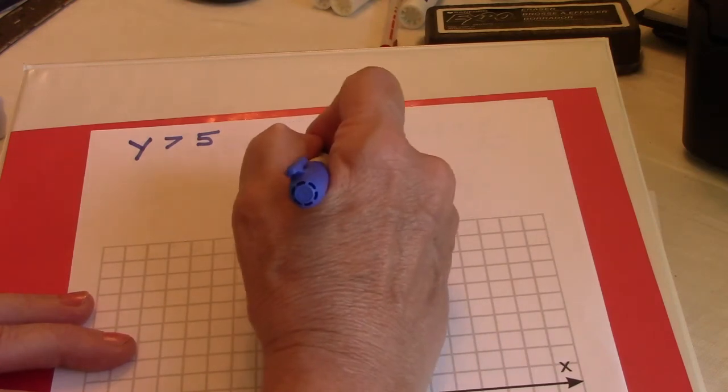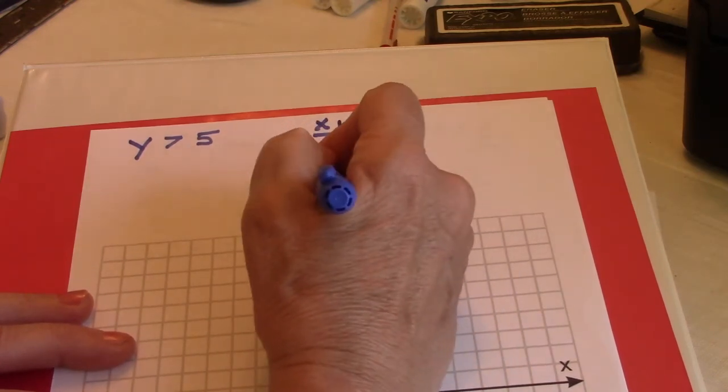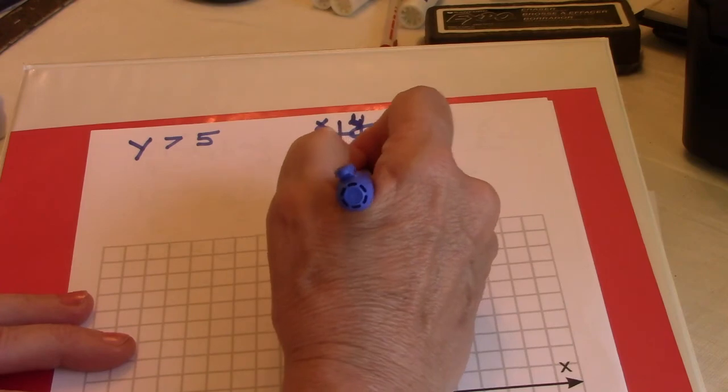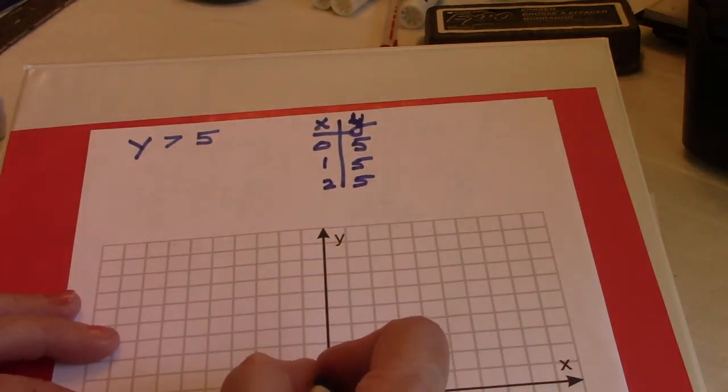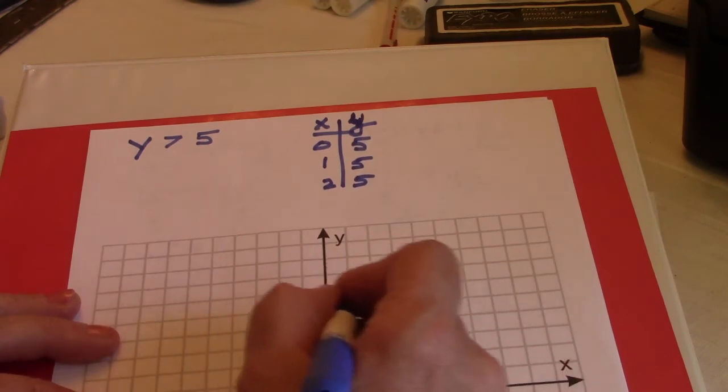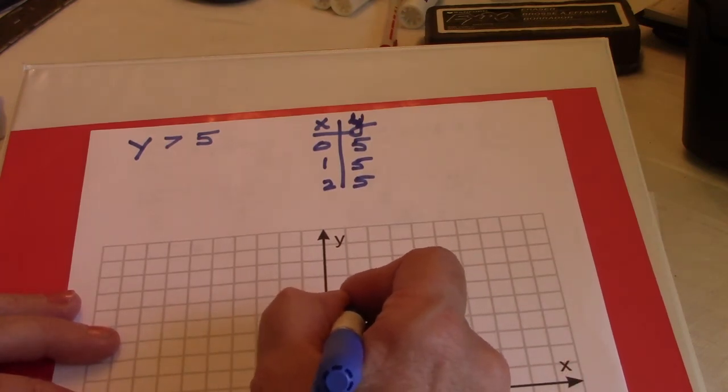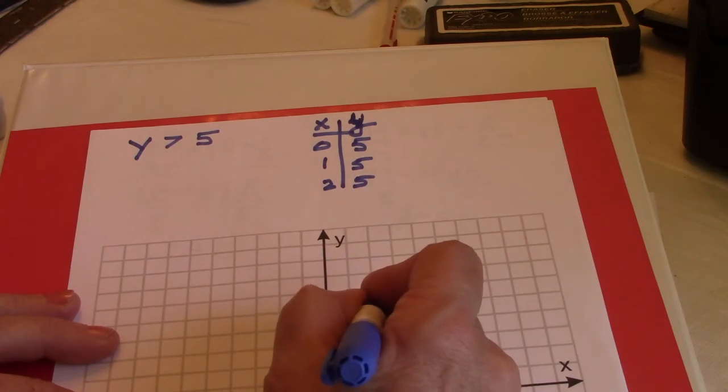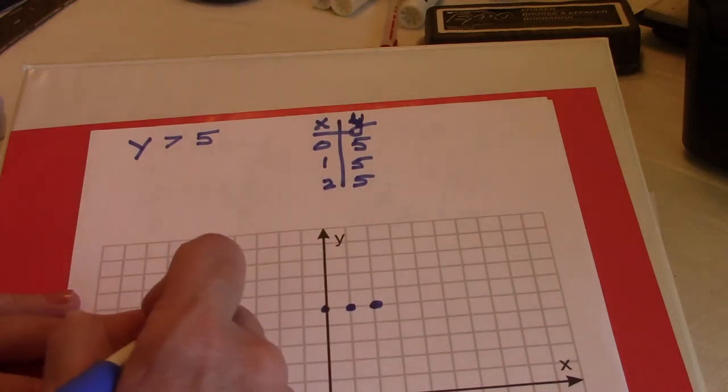If x is 0, y is 5. If x is 1, y is 5. If x is 2, y is 5. In other words, whatever, 1, 2, 3, 4, 5. It doesn't matter what point you pick. If whatever x is, y is 5.